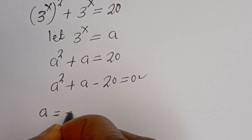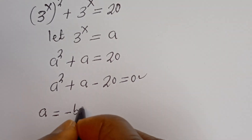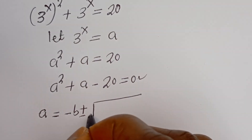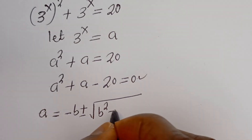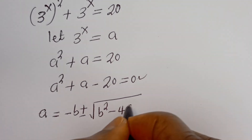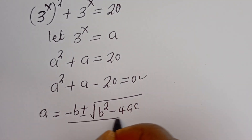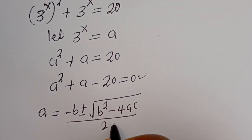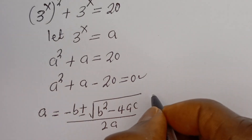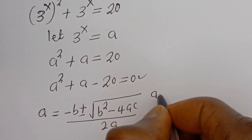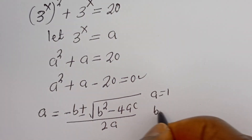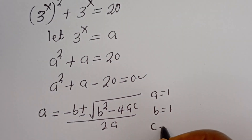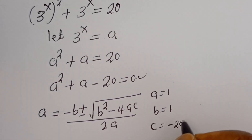A is equal to minus b plus or minus the square root of b squared minus 4ac, all over 2a. From this equation, a is equal to 1, b is equal to 1, and c is equal to minus 20.